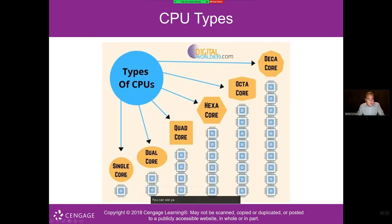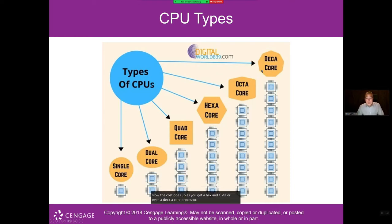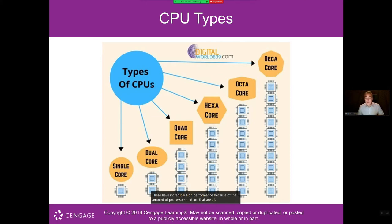You can see single core, dual core with two, quad core with four, and even more robust processors — hexa, octa, or deca core. The cost goes up as you add more cores, but the performance is incredibly high because all those processors are built within one chip.